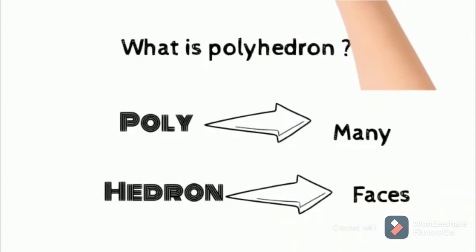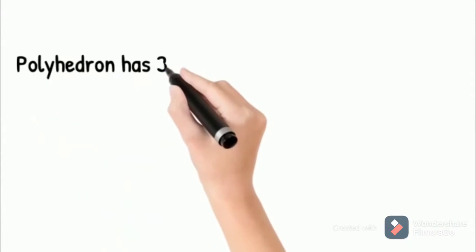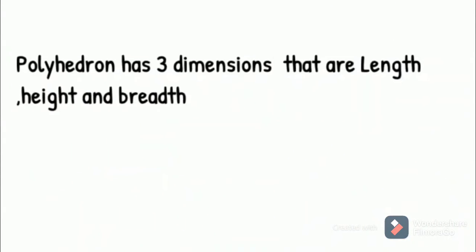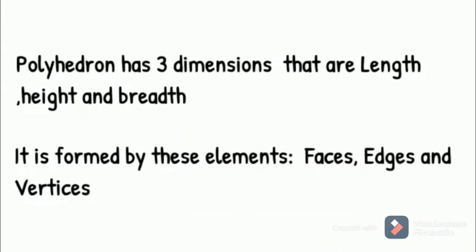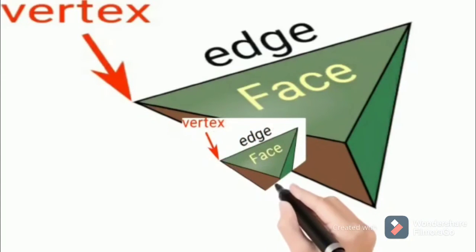A polyhedron has three dimensions: length, breadth, and height. It also has volume and is formed by three elements—faces, edges, and vertices. Now we will look at the image to clarify our concept.